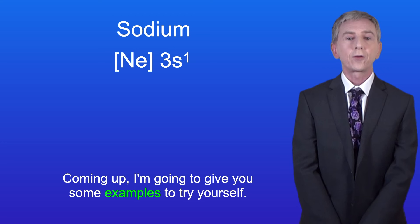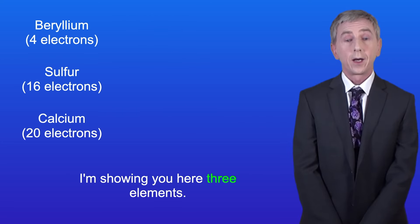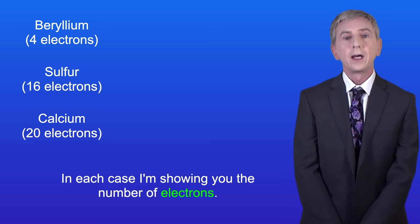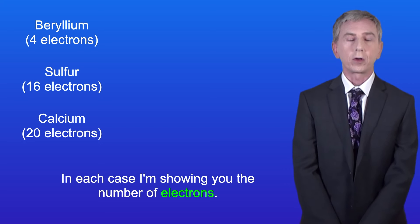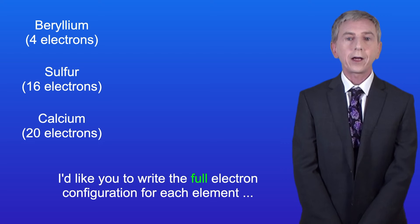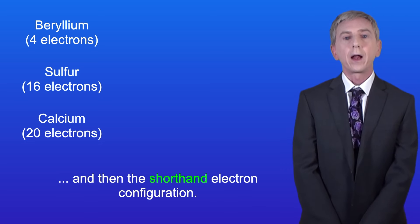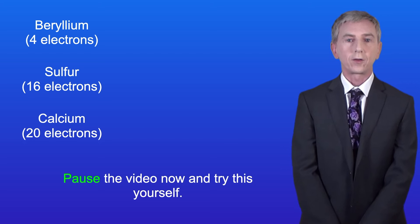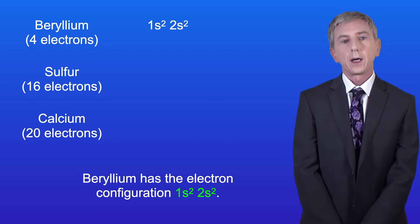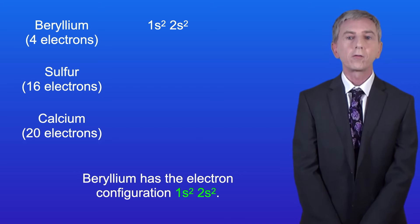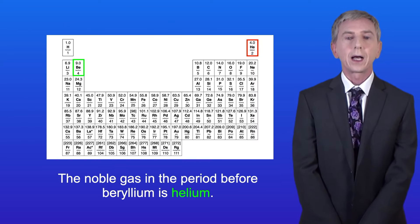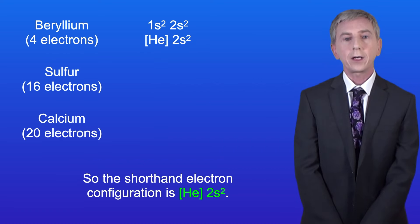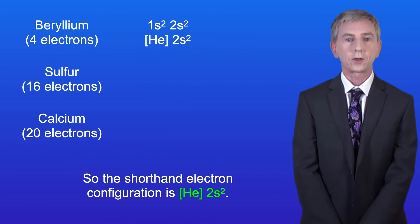I'm showing you three elements, and in each case I'm showing you the number of electrons. I'd like you to write the full electron configuration for each element and then the shorthand electron configuration — so pause the video now and try this yourself. Beryllium has the electron configuration 1s2 2s2, and the noble gas in the period before beryllium is helium, so the shorthand electron configuration is [He] 2s2.